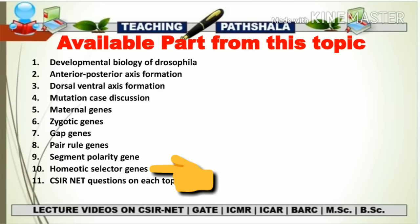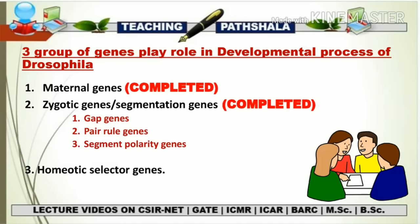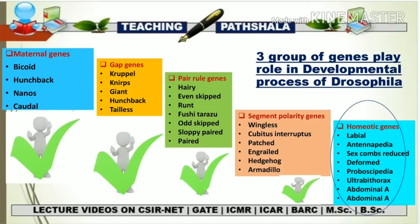During the developmental process of Drosophila, there are a total of three groups of genes that play a very important role. The first is the maternal gene, the second is the zygotic genes — which include the gap genes, pair rule genes, and segment polarity genes. Today we are going to study about the homeotic selector genes, which include: labial, deformed, Sex combs reduced, proboscipedia, Antennapedia, Ultrabithorax, Abdominal-A, and Abdominal-B.